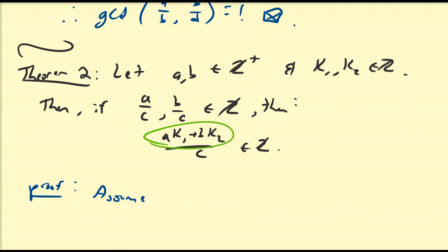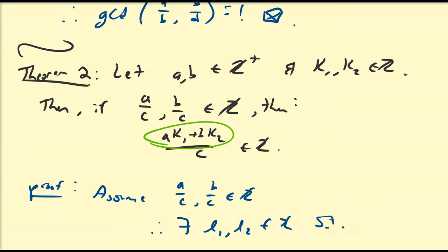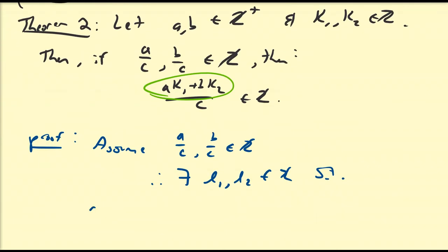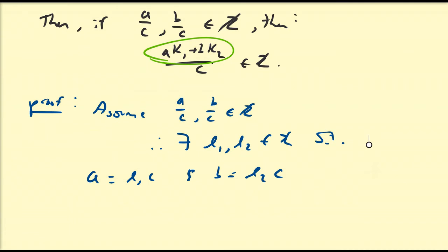We're going to assume what's given in the proposition: A over C and B over C are integers. If this is the case, that means there exist numbers L1 and L2 in the set of integers such that A equals L1·C and B equals L2·C. Adding these two together, A plus B equals L1·C plus L2·C, which is the same as C times (L1 plus L2).